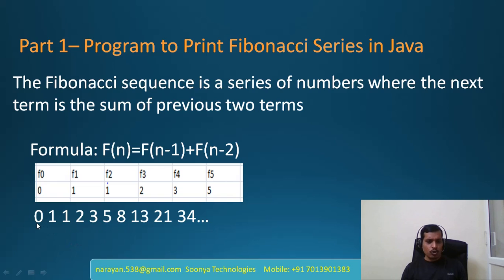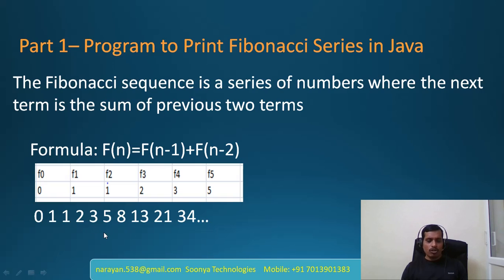In this series, the first two terms are 0 and 1. The next term is the sum of the previous two terms: 0 + 1 = 1, 1 + 1 = 2, 1 + 2 = 3, 2 + 3 = 5, and so on.